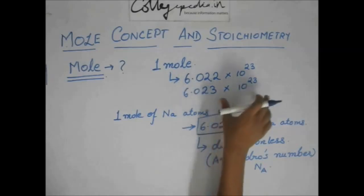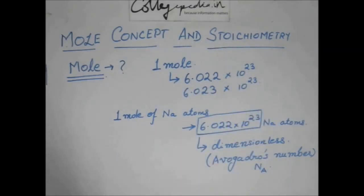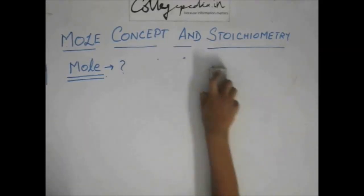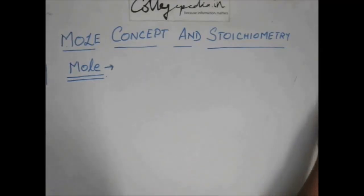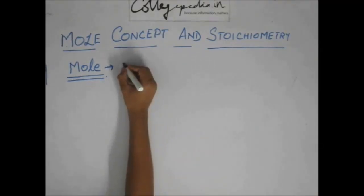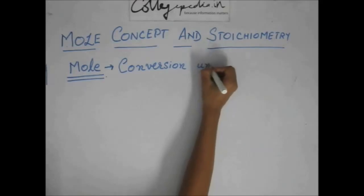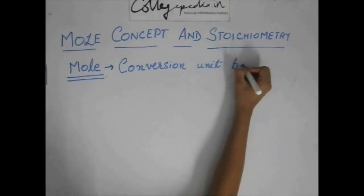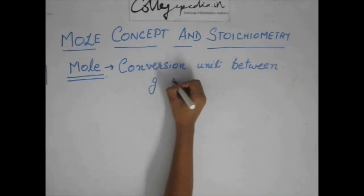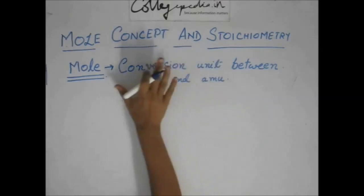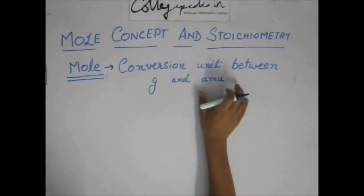Now, what is the significance of this quantity? Why is there such a quantity of 6.022 into 10 to the power 23? In chemistry, this is a very important quantity because a mole is the conversion unit between grams and atomic mass unit. It is just a conversion unit between gram and atomic mass unit.